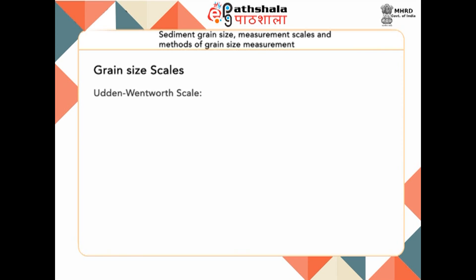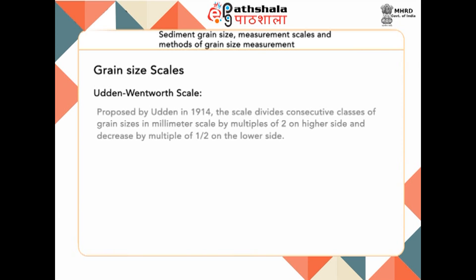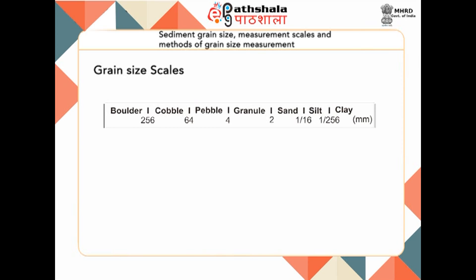This necessity for a size scale gives rise to different kinds of grain size scales. We start with the Udden-Wentworth scale, proposed by Udden in 1914. The scale divides consecutive classes of grain sizes in millimeters by multiples of 2 on the higher side and decreases by multiples of half on the lower side. The classes include boulder, cobble, pebble, granule, sand, silt, and clay. Any grain larger than 256 mm is called a boulder.